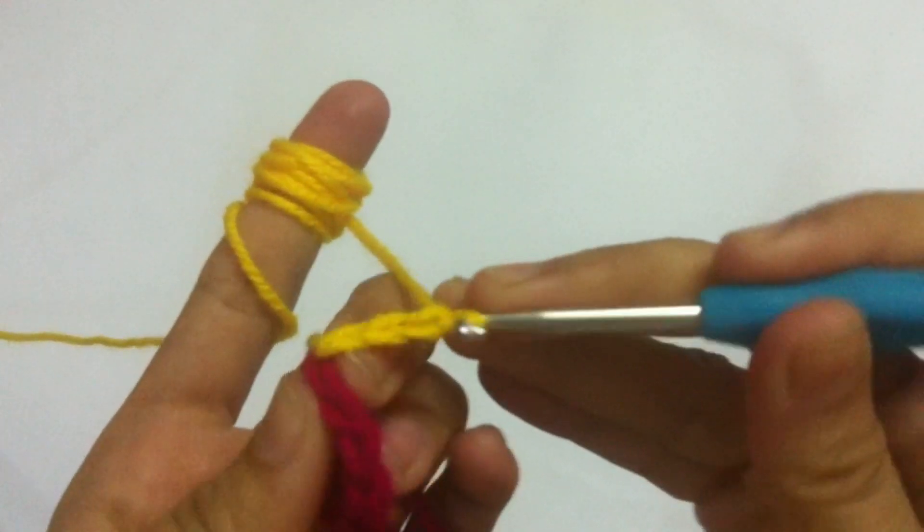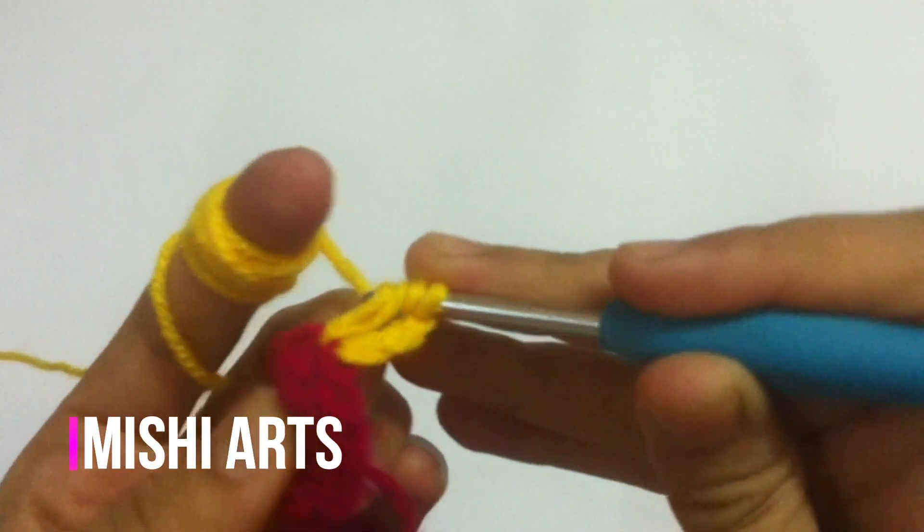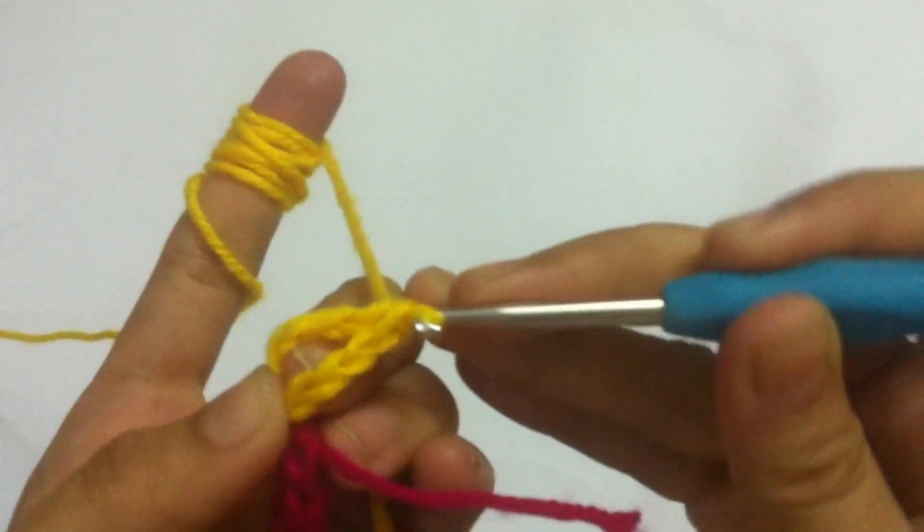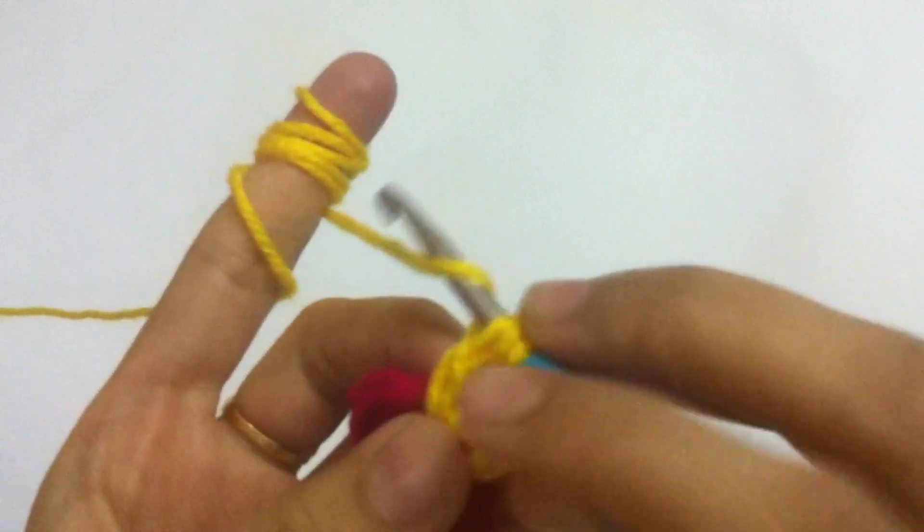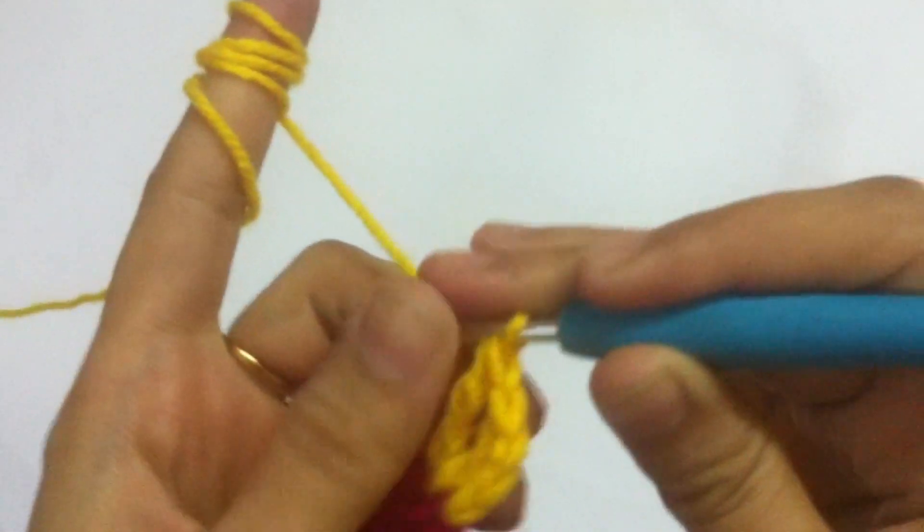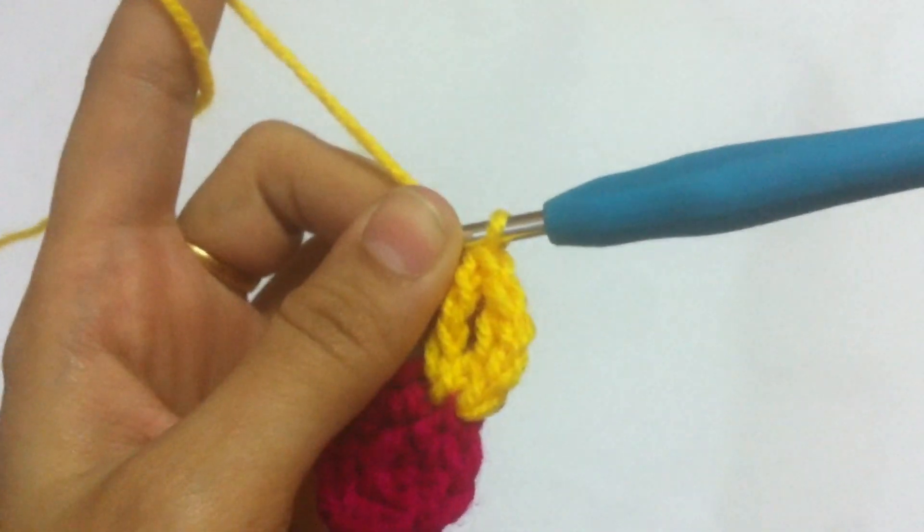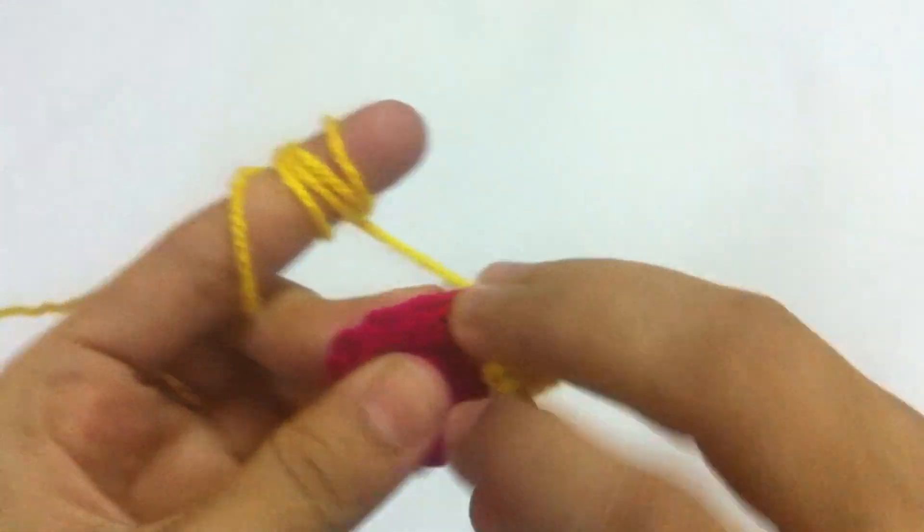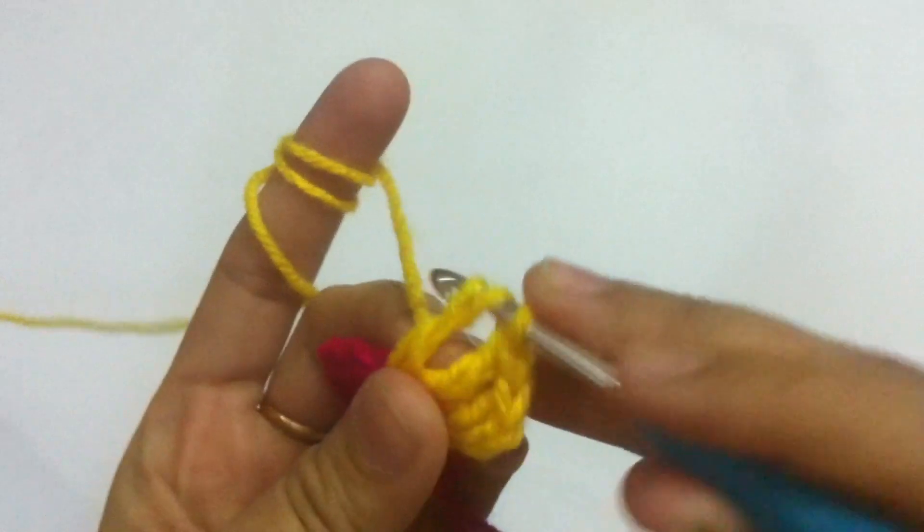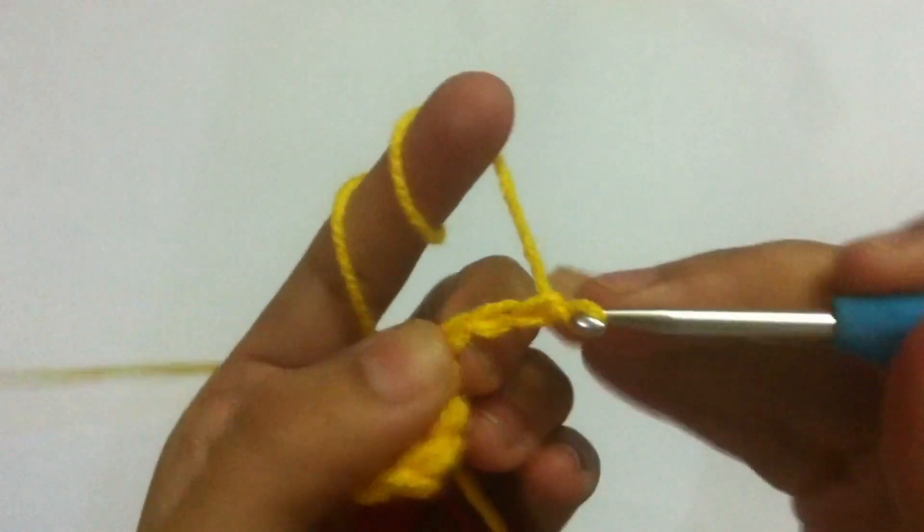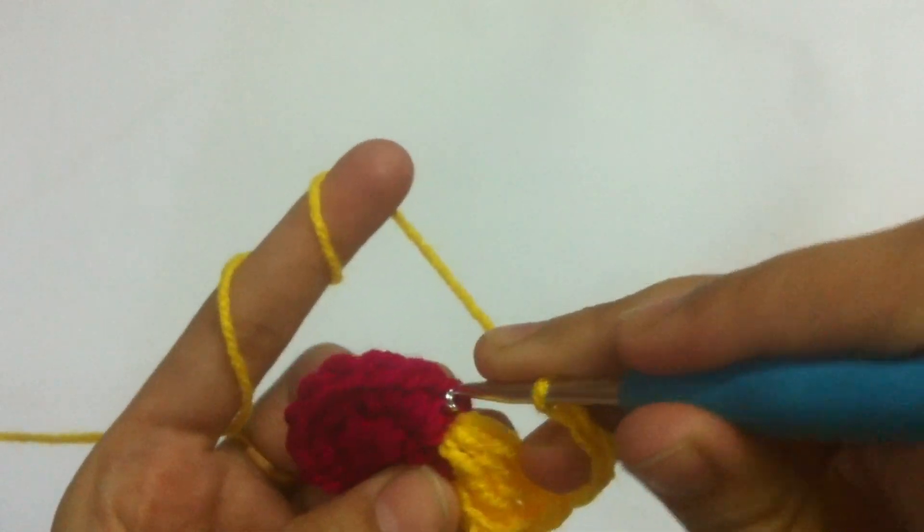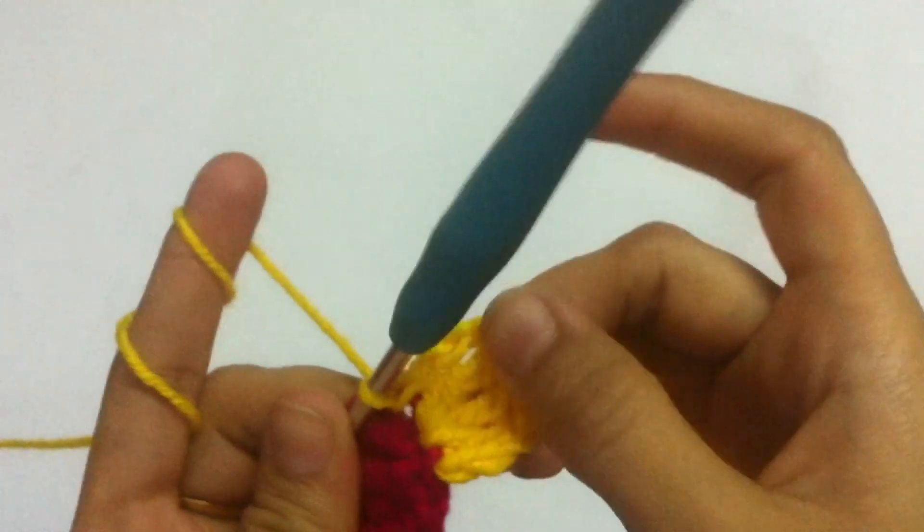For starting the petals, we have to make three chains. Yarn over two times and make three triple crochets. Remember, you have to yarn over two times. Three trebles. Now you have to make three chains and slip stitch into the very next stitch. So our first petal is complete.